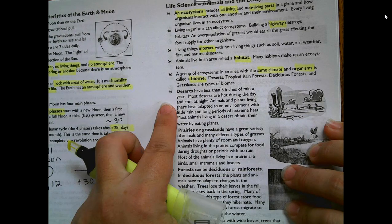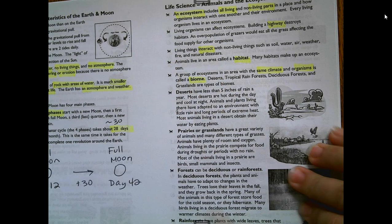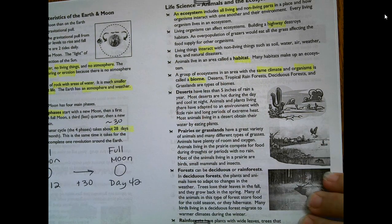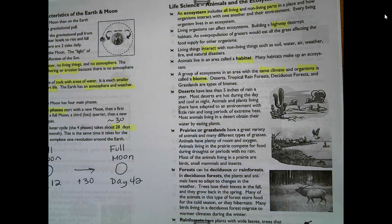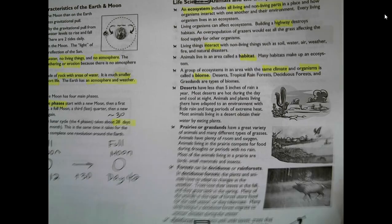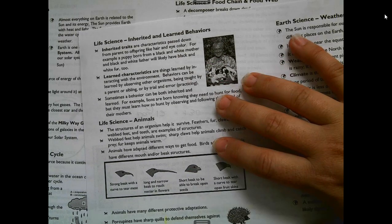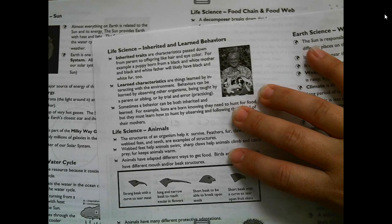A group of ecosystems in an area with the same climate and organisms is called a biome — things like deserts, tropical rainforests, and grasslands. The review sheet has each biome broken down, so students can read what makes each one unique.